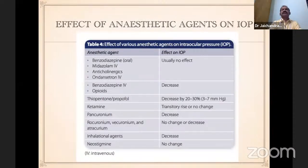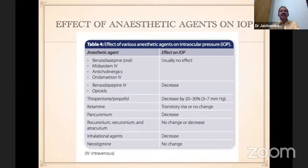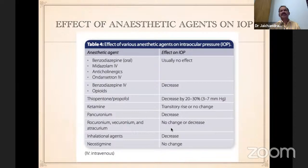Effects of anesthetic agents on intraocular pressure: Benzodiazepines (IV midazolam) — usually no effect. Thiopentone — decreases IOP. Propofol — decreases IOP significantly. Ketamine — transient rise (some recent literature says no change). Pancuronium — not used nowadays. Vecuronium, rocuronium, atracurium — no change or decrease. Inhalation agents — decrease IOP. Neostigmine reversal agents — no effect on IOP. The important point to remember is ketamine.